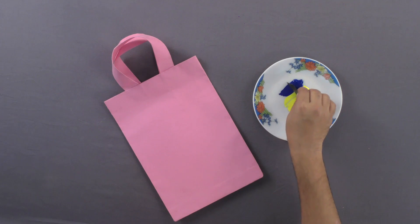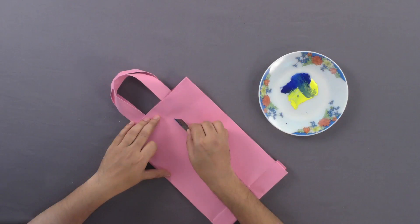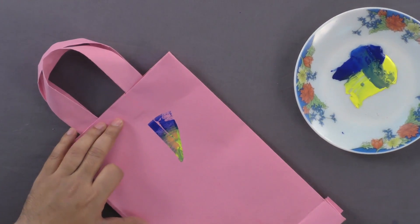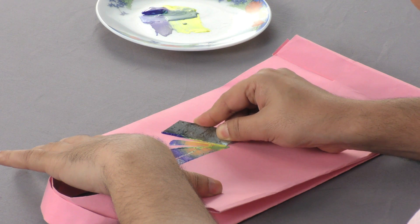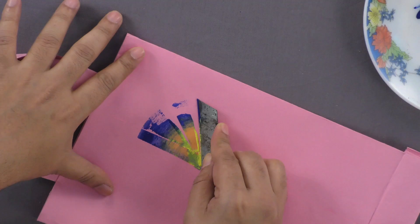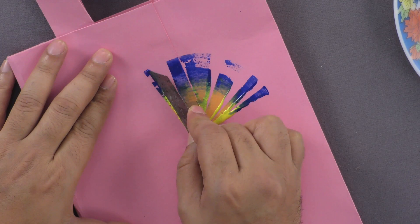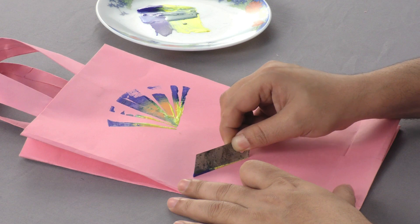Now dip the edge of the blade in two colors like blue and yellow. Rotate the blade on the bag to make colored designs just like this. You can create different beautiful patterns.